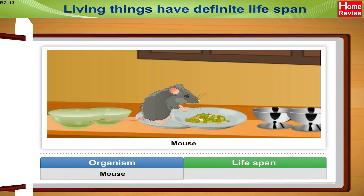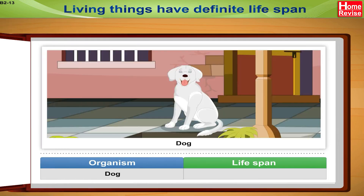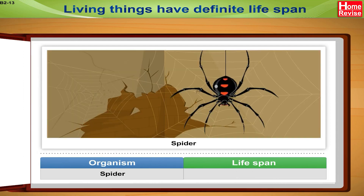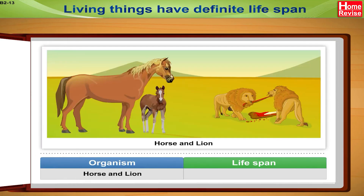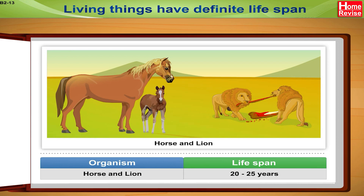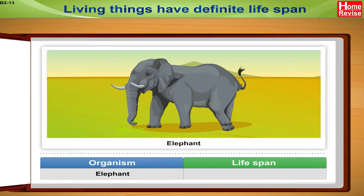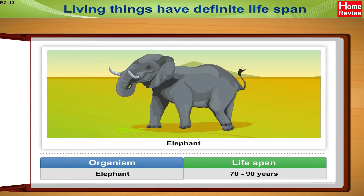A mouse on average remains alive for one to three years, a dog for fifteen to twenty years. The life span of a spider is twenty years; that of a horse and lion is twenty to twenty-five years.